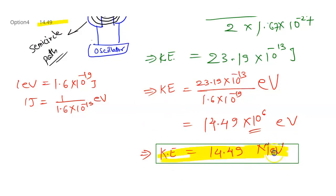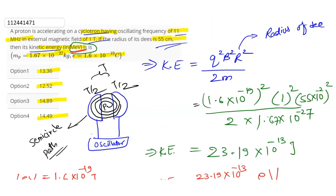We can see which of the given options will be correct. We can see that option 4, 14.49 mega electron voltage, is the correct answer. Thank you.